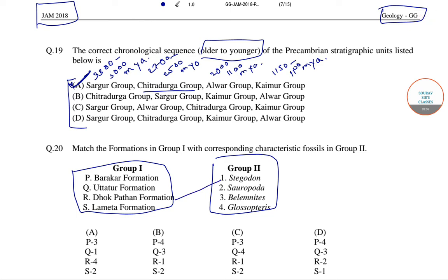Next, Sauropoda fossils are found in the Lameta formation, so that is S2. Next, Belemnites fossils are found in the Uttatur formation. So the correct answer is P4, Q3, R1, and S2, which is option number B.